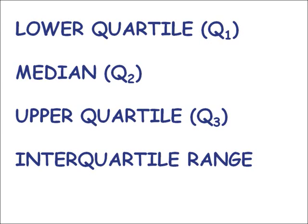There are three quartiles, and the median is the one in the middle. The other quartiles are called the lower quartile and the upper quartile. Sometimes the quartiles are written as Q1, Q2, and Q3 as shown. The interquartile range is the difference between the lower quartile and the upper quartile.